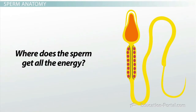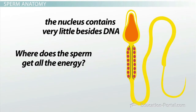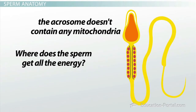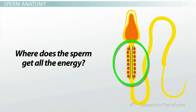Now you may be wondering where the sperm cell gets the energy to whip a long flagellum back and forth so vigorously. After all, the nucleus contains very little besides DNA, and the acrosome doesn't contain any mitochondria to provide energy. That just leaves the flagellum itself. Sure enough, a portion of the flagellum is surrounded by mitochondria that provide the ATP that powers the whipping motion.